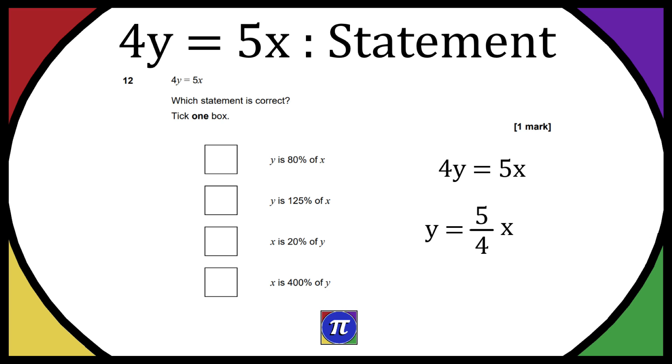Now obviously 5 over 4 is a fraction but if we times it by 100 and then use the s to d on our calculator we can convert it to a percentage. So you just times it by 100 and to get it in a percentage form if it doesn't give it to you as a whole number, convert it with s to d.